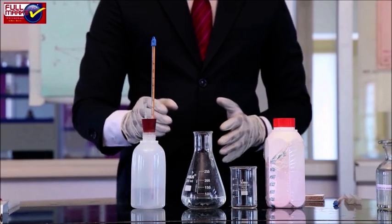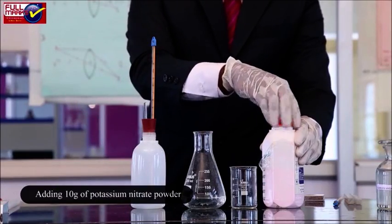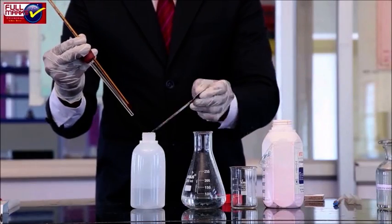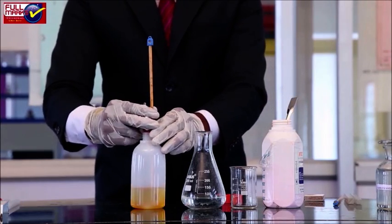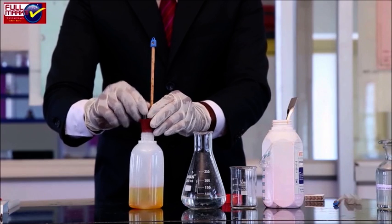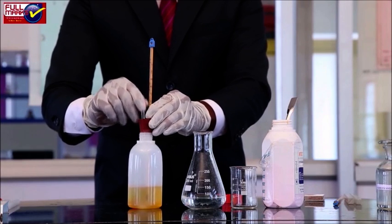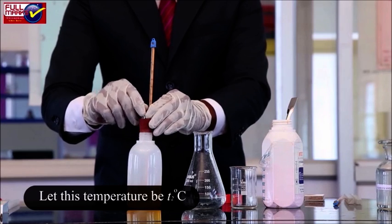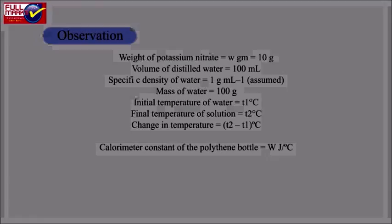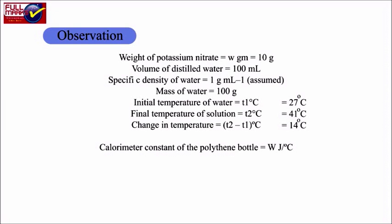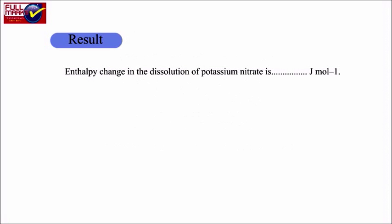10 grams of potassium nitrate powder is put in the bottle and the cork is immediately put back. The mixture is stirred thoroughly and its temperature is noted on complete dissolution of potassium nitrate. Let this temperature be T2 degrees Celsius. Observations. Result: Enthalpy change in the dissolution of potassium nitrate.